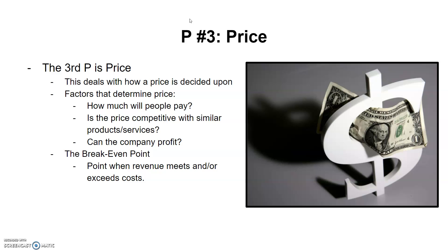The third P is price. You may think price is simple, but a lot goes into deciding it. First, how much will people pay for the item? If you price something at $30 and research shows people are only willing to pay about $25, then you've outpriced it and you're never going to sell that item. Second, is the price competitive compared to other similar products or services?